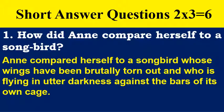Short answer questions with answers. How did Anne compare herself to a songbird? Anne compared herself to a songbird whose wings have been brutally torn out and who is flying in utter darkness against the bars of its own cage.